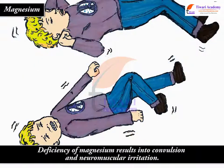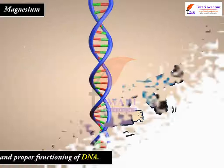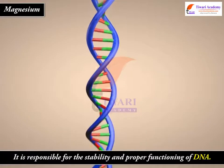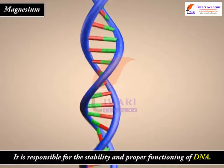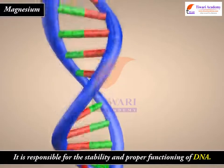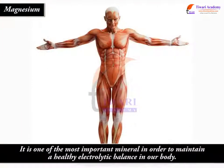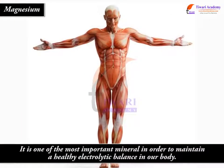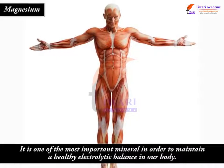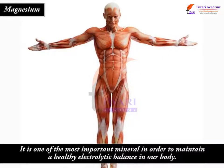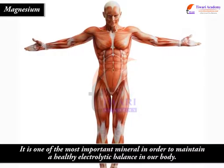Deficiency of magnesium results in convulsion and neuromuscular irritation. It is responsible for the stability and proper functioning of DNA. It is one of the most important minerals in order to maintain a healthy electrolytic balance in our body.